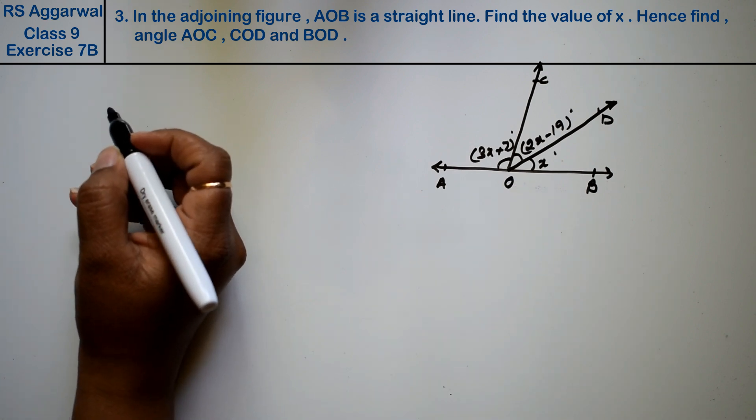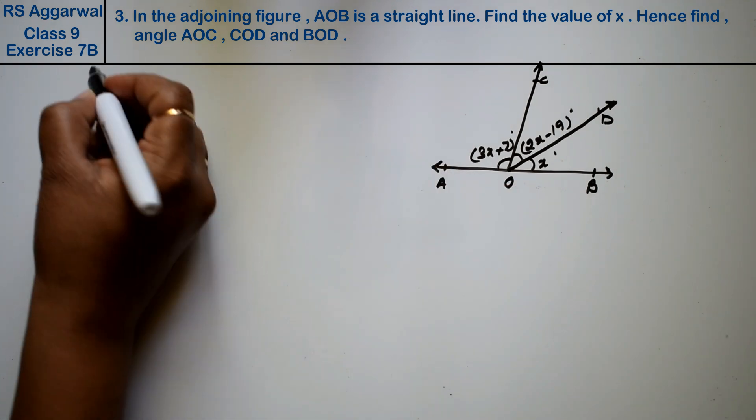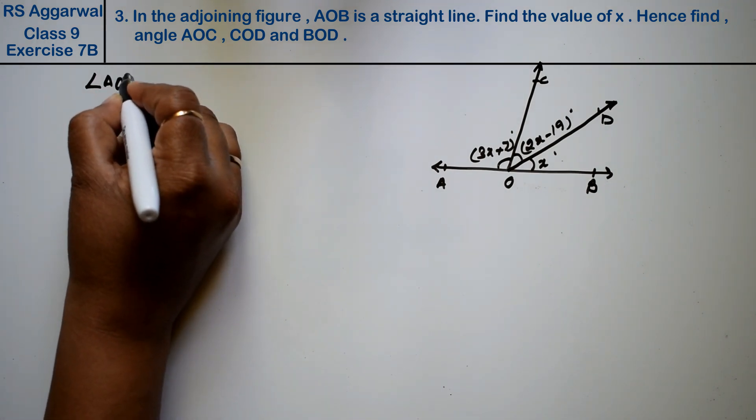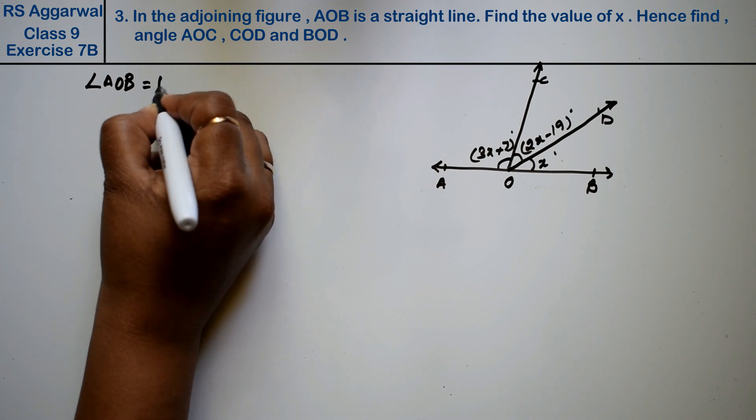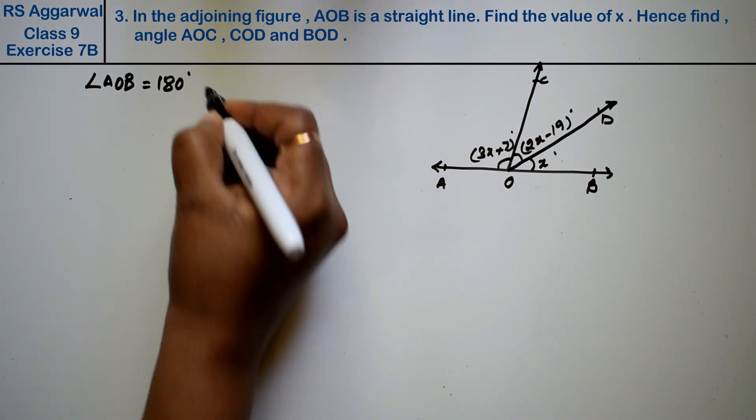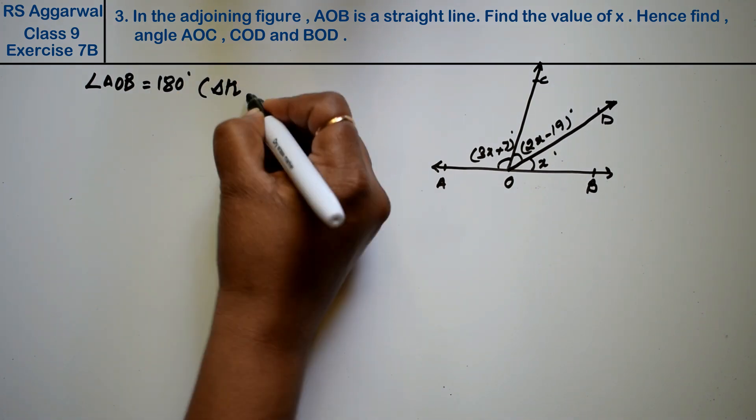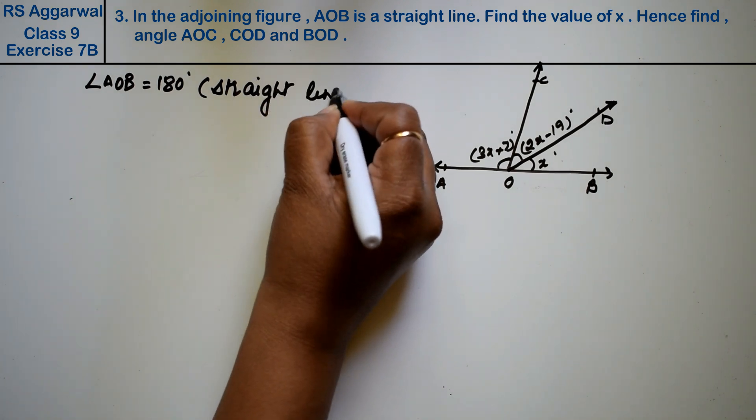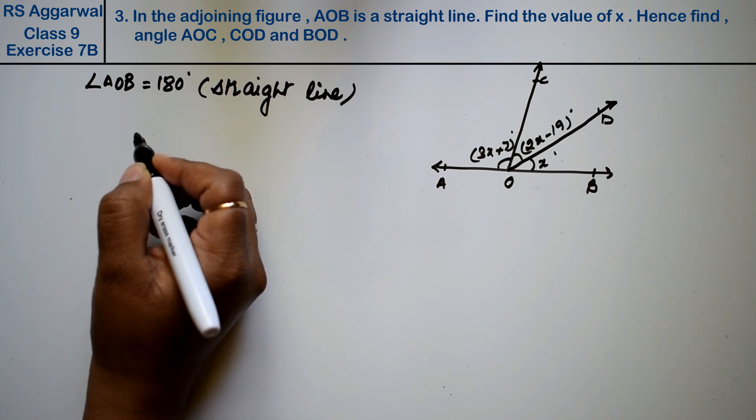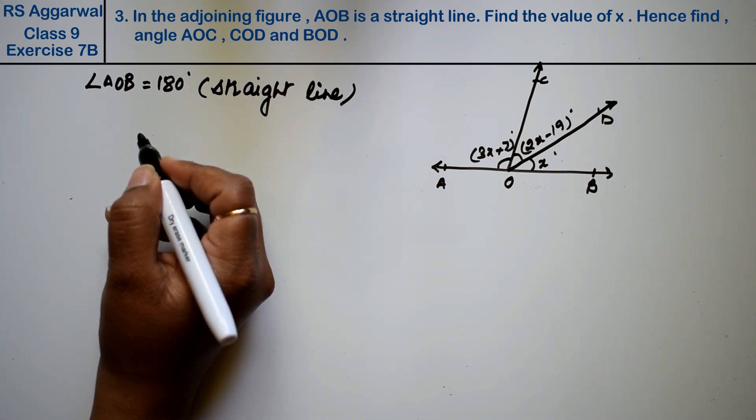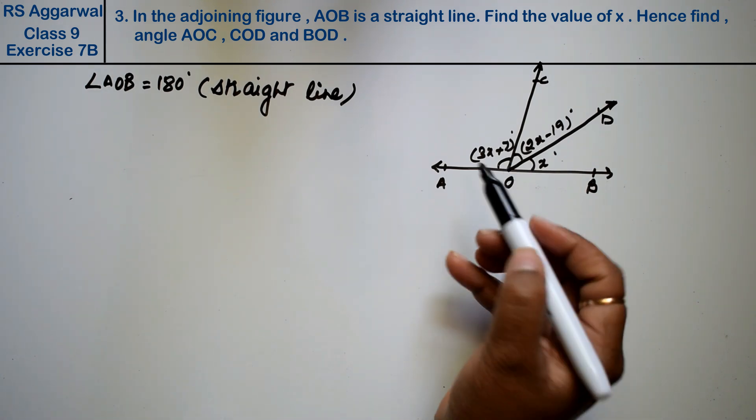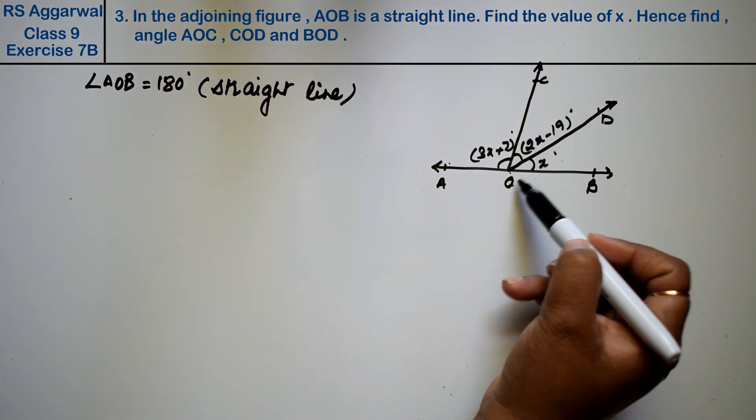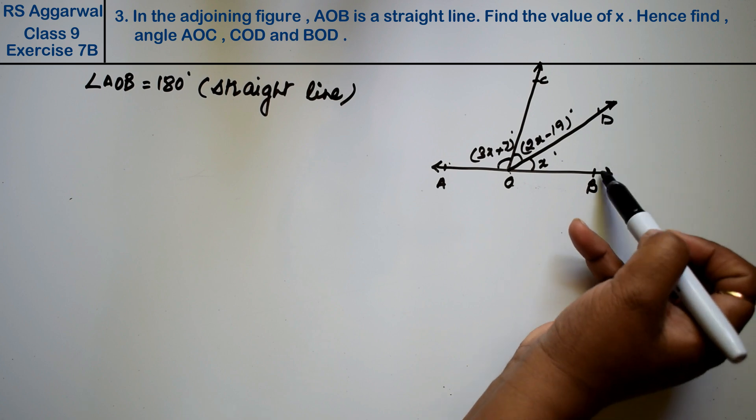Now what he is saying, AOB is a straight line. AOB is a straight line, so angle AOB is 180 degrees because it's a straight line. Now find the value of x, hence find AOC, COD, and BOD right friends.